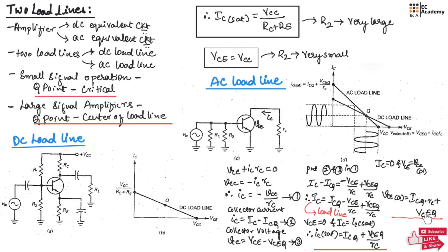This is the equation for VCE at the cutoff region, as shown in the figure. Because the AC load line has a higher slope compared to the DC load line, the maximum peak-to-peak output is always less than the supply voltage. For example, if VCC = 10V, then the maximum peak-to-peak output will be less than 10V.